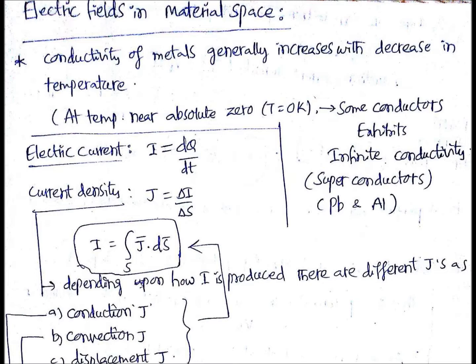The conductivity of metals in general increases with decrease in temperature. That is for metals — conductors. At a temperature near absolute zero, that is T equals zero Kelvin — absolute zero means zero Kelvin, not degree centigrade, that is important.